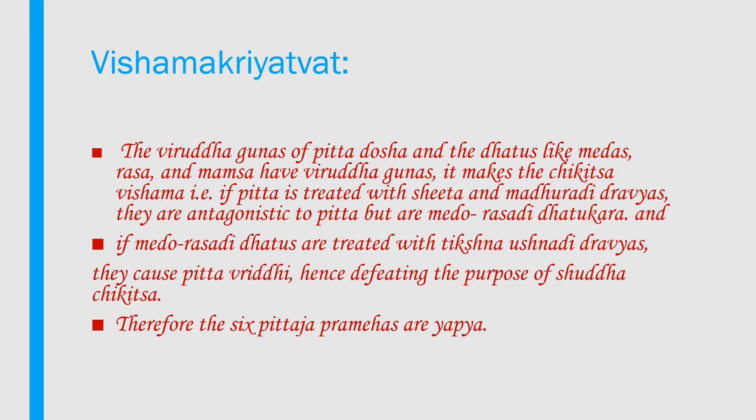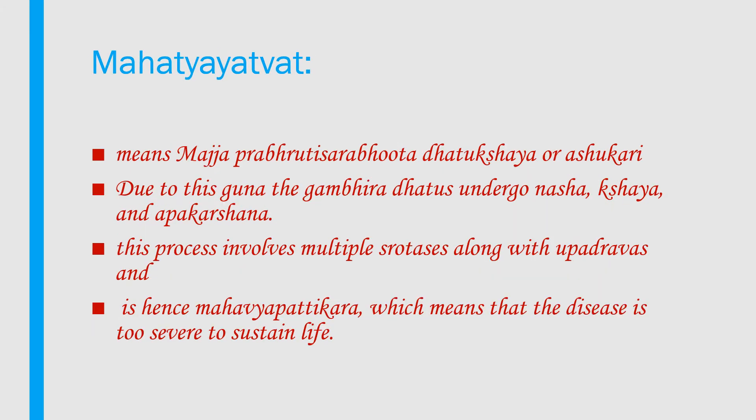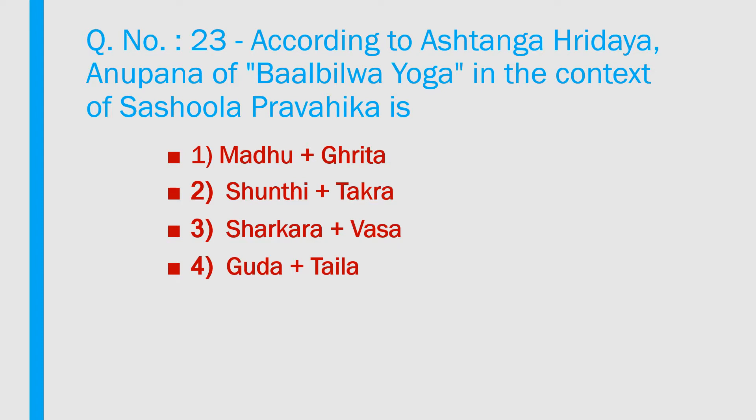Vishamakriyatwa: The virudha gunas of pitta dosha and the dhatus like medas, rasa and mamsa have virudha gunas, making chikilsa vishyama. If pitta is treated with shita and maduradi drevya, they are antagonistic to pitta but are medu rasadi dhatu-kara; and if medu rasadi dhatus are treated with tikshna ushnadi drevya, they cause pitta virudhi, defeating the purpose. Therefore the six pitta pramehas are yakpya. Maha atiyatwa means majya prabhradi sarabhuta dhatu kshaya, involving gambira dhatu sandago, dhatu kshaya and abhakarshana, making the disease mahabhyabhattikara — too severe to sustain life.